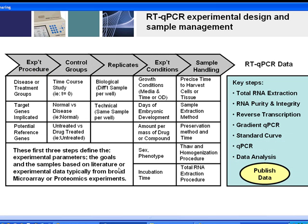Stephen Bustin and the MIQE authors spent considerable time on experimental design and sample management. This starts with defining disease and treatment groups, target genes implicated in the study, potential reference genes used to normalize for sample loading, and control groups — such as T0 for a time course study, normal tissue for a disease comparison, or untreated samples for a drug treatment study. Replicates are also addressed here.